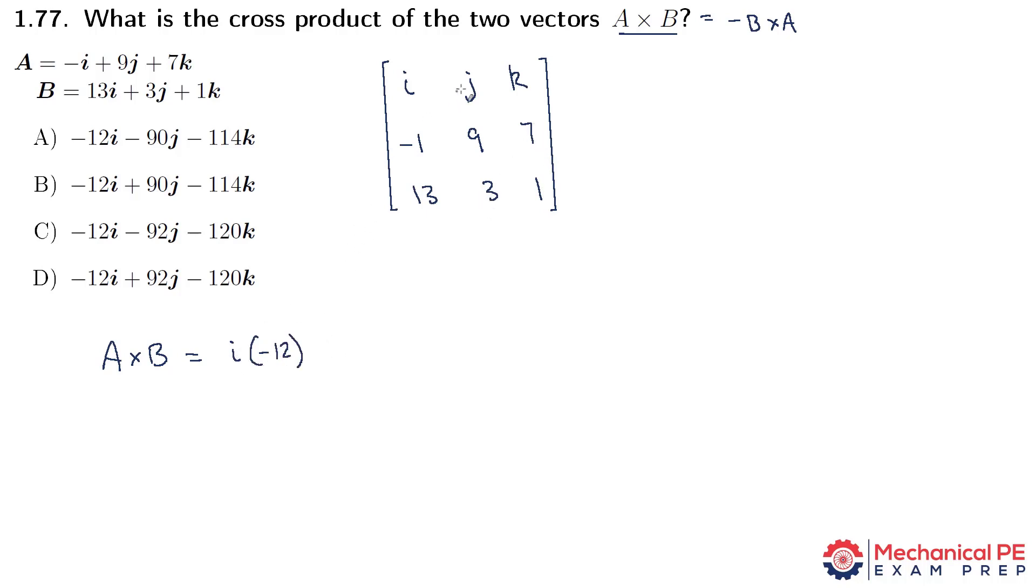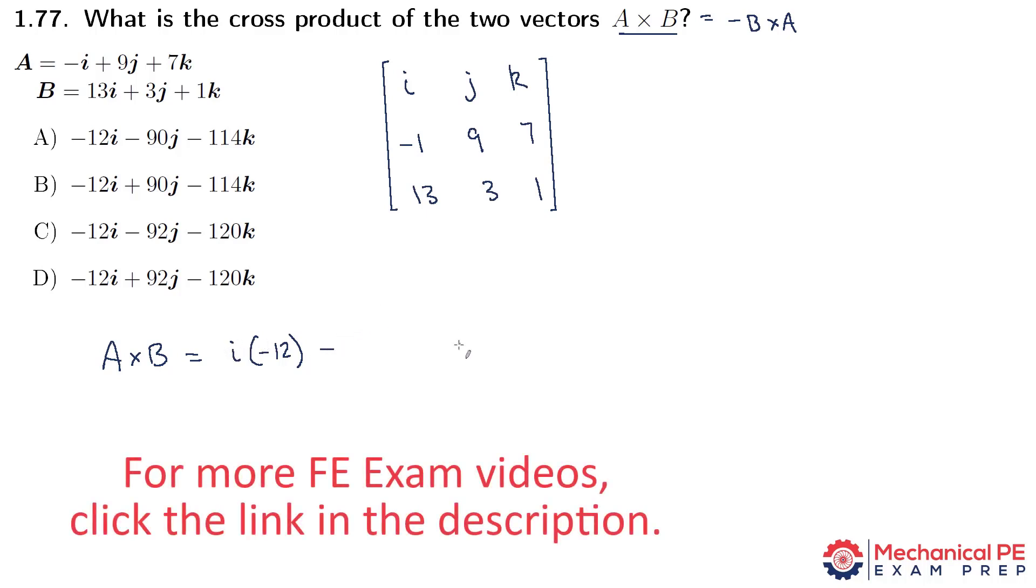And now for the middle term, it's absolutely critical, and a lot of folks will forget this if you haven't done it in a while. This term has to be minus. So it alternates: the first term is plus, minus, plus. So it's minus j times.